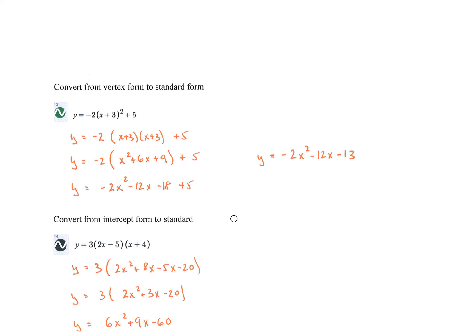Converting from vertex to standard form is just multiplying out. x plus 3 squared is the same as x plus 3 times x plus 3 — FOIL it out. x times x is x squared; 3 times x is 3x, and the other 3 times x is another 3x, giving 6x; and 3 times 3 is 9. Then distribute the negative 2 to all those terms, and combine like terms to get negative 2x squared minus 12x minus 13. This is standard form: ax squared plus bx plus c.